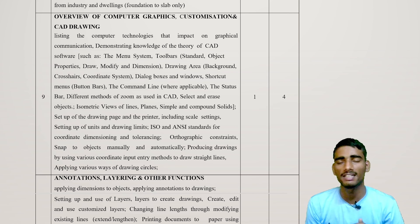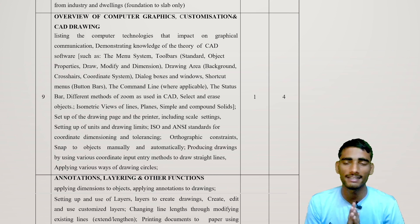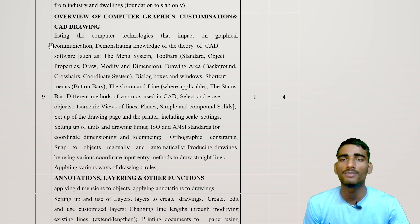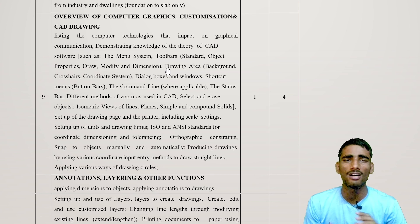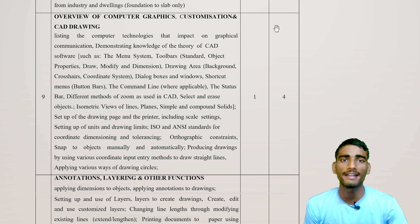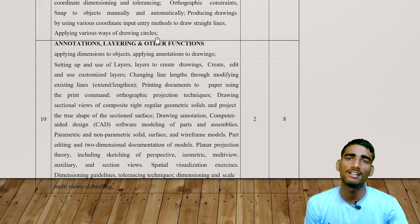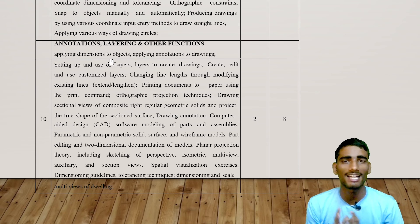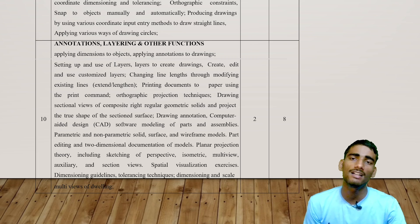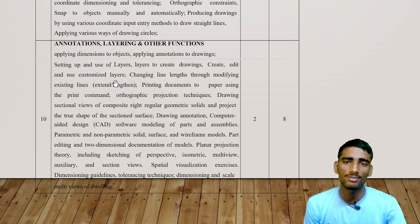Ninth is an Overview of Computer Graphics, Customization, and CAD Drawing. You have to study computer-aided design drawing using various toolbars: menu system, toolbar, standard, object properties, draw, modify, and dimension. You also study the drawing area, background, crosshair, coordinate system, annotation, layering, applying dimensions to objects, setting up and using layers, and creating, editing, and using customized layers.